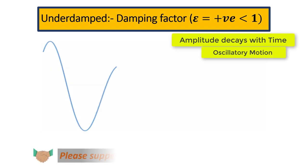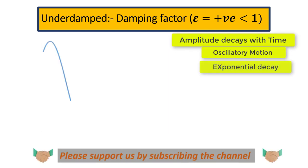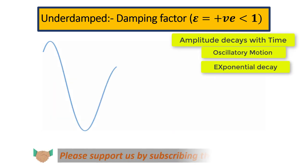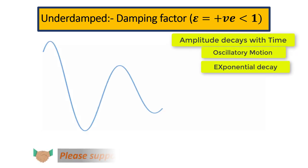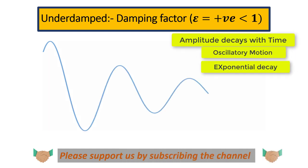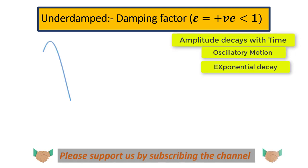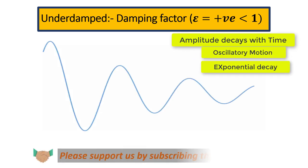The motion is decaying in an exponential manner. Even though you can't directly see it in the plot, if you connect all the maximum amplitudes, the curve you get is an exponential curve. That is why the amplitude decay is said to be exponential in nature, which we can also verify directly by solving the ODE.